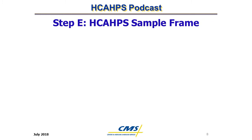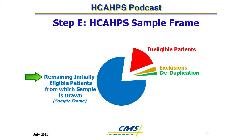Step E: H-CAPS Sample Frame. The remaining initially eligible patients after all preceding steps form the sample frame for the hospital, represented by the blue slice of the circle. The count of patients in the blue slice is referred to as the number of eligible discharges. This is the number submitted in the eligible discharge field during H-CAPS data submission, unless patients are subsequently determined to be ineligible or excluded post-sampling.